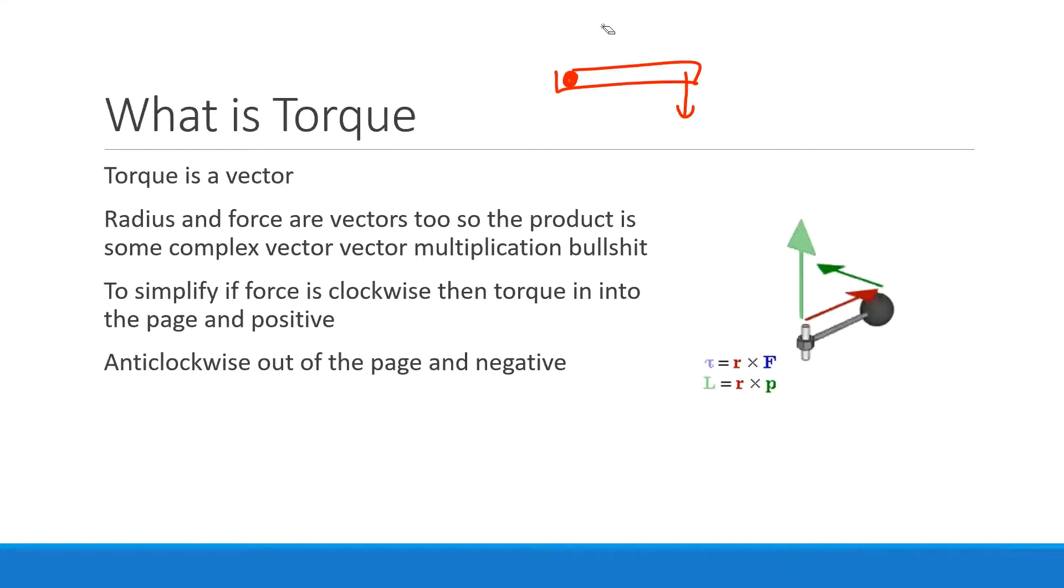The opposite is true: if the torque is going the other way, anti-clockwise, it will come out of the page. Again, can't draw that because I can't draw in three dimensions. But essentially it would come out of the page, and that's how you talk about direction. Sometimes they just refer to it as positive and negative torque: clockwise being positive, anti-clockwise being negative.